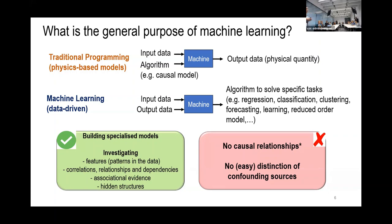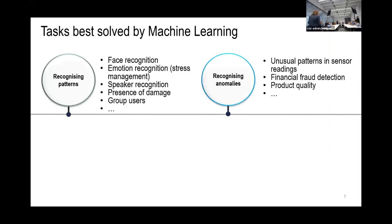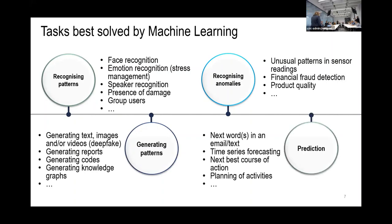Machine learning is very helpful in building a specialized model and investigating correlation and association, but it's not very good at telling us about causal relationships. Another challenge is that it's not straightforward to distinguish different things that are contributing to the response — for example, if you have a wind turbine with waves, wind, and a big storm, it's difficult to distinguish all of these elements acting on the structure. Machine learning is very good at recognizing patterns, anomalies, generating patterns, and making predictions. So we have an opportunity to use this and embed our physical knowledge as well.